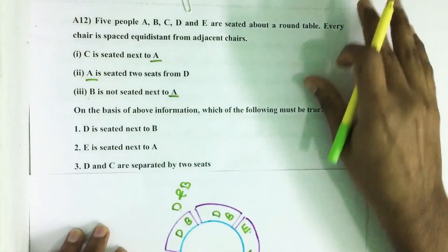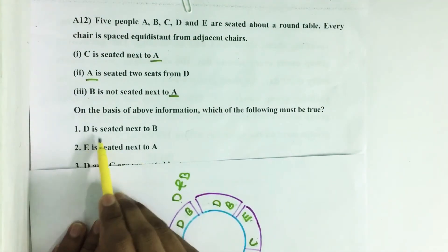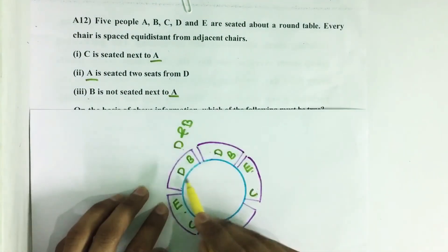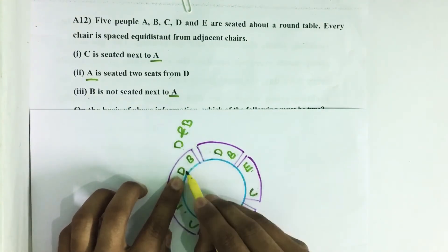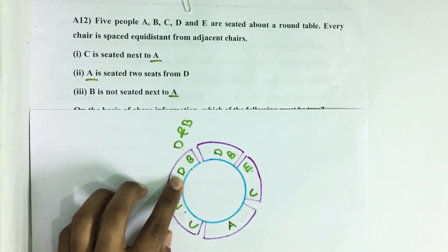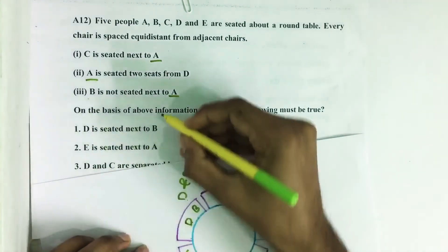Now let us see the statement given here. D is seated next to B. Yeah, if suppose D is here, B will be here. That is D is seated next to B. Then this is true.